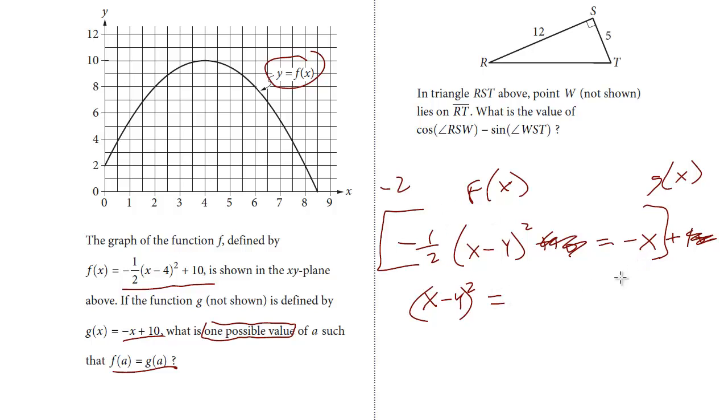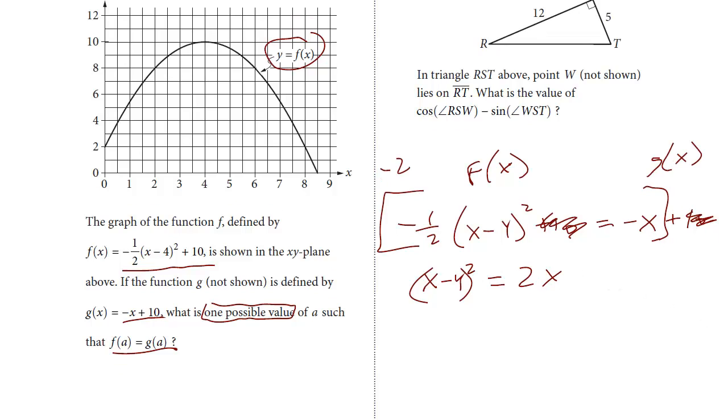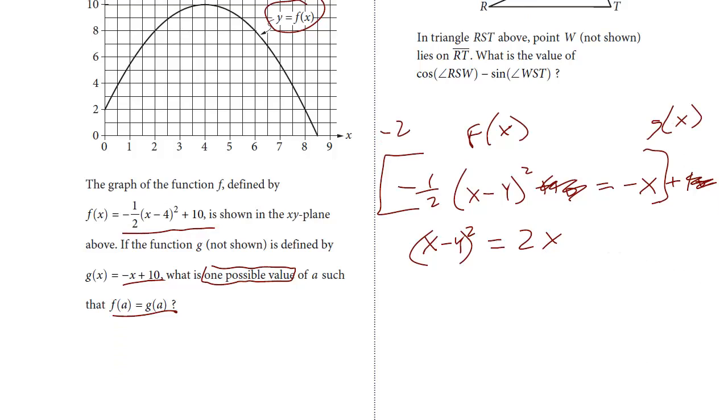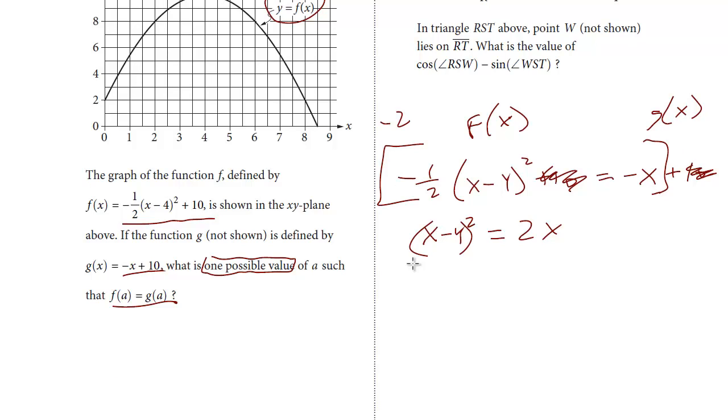And this is going to become 2x. See how much I simplified that by? So now we're just going to solve it. And what we can do, remember, this is the quantity squared. So I have to FOIL this out. We get x² minus 4x minus 4x, which is minus 8x. Then we get plus 16 equals 2x.